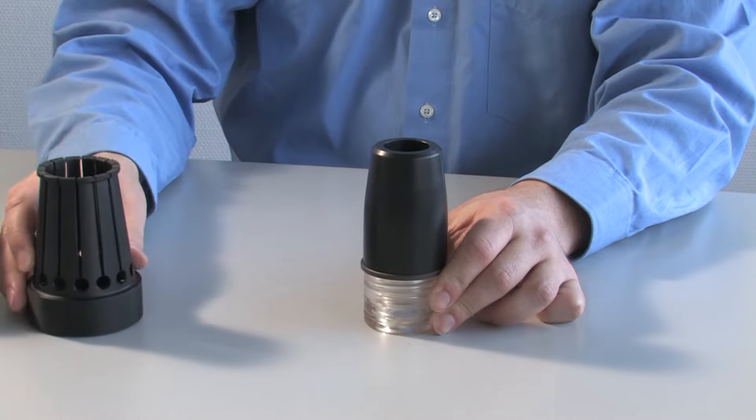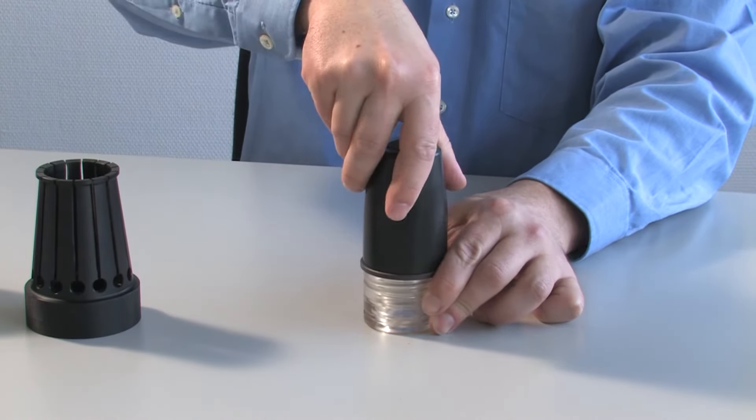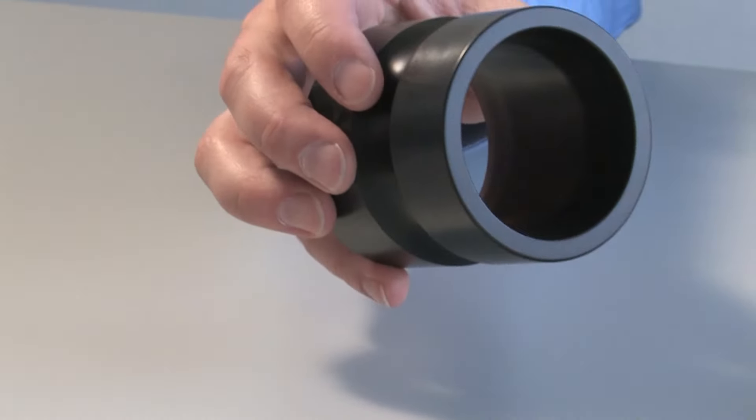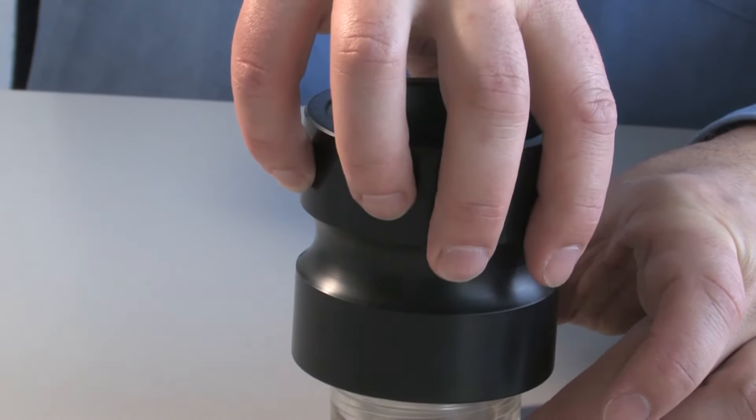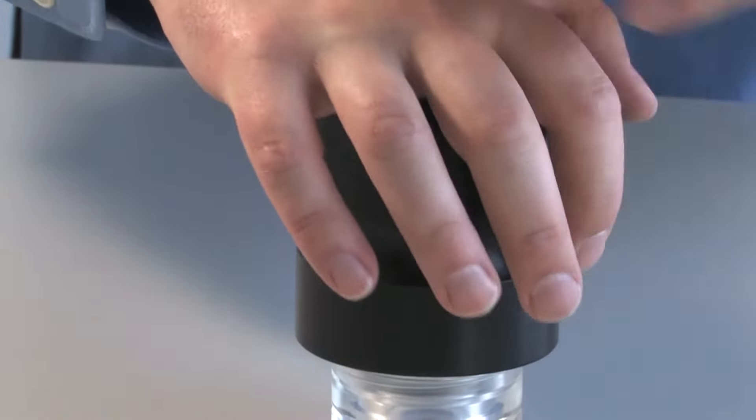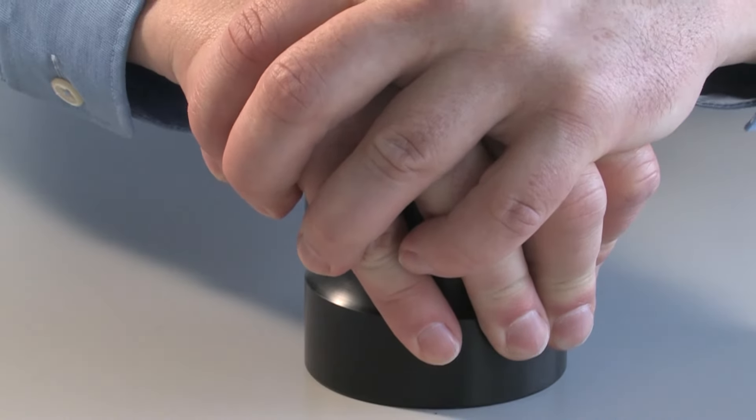If compact seals feature a PTFE profile ring, this ring usually needs to be calibrated with a matching calibration sleeve after installation. If the cylinder tube has a sufficiently large lead-in chamfer, a final calibration may not be necessary.